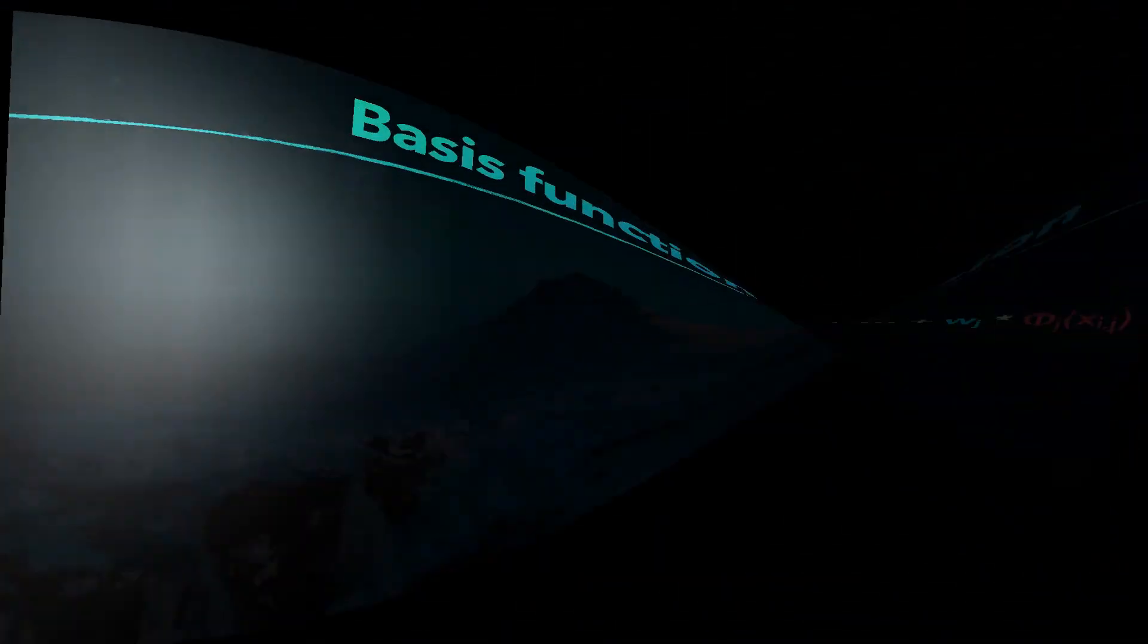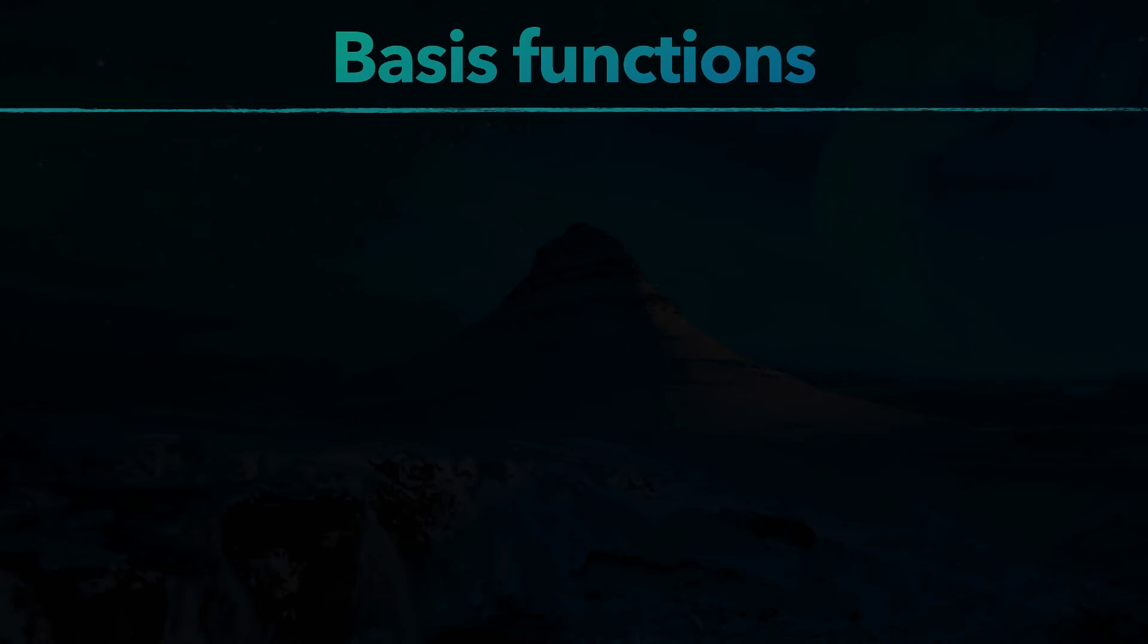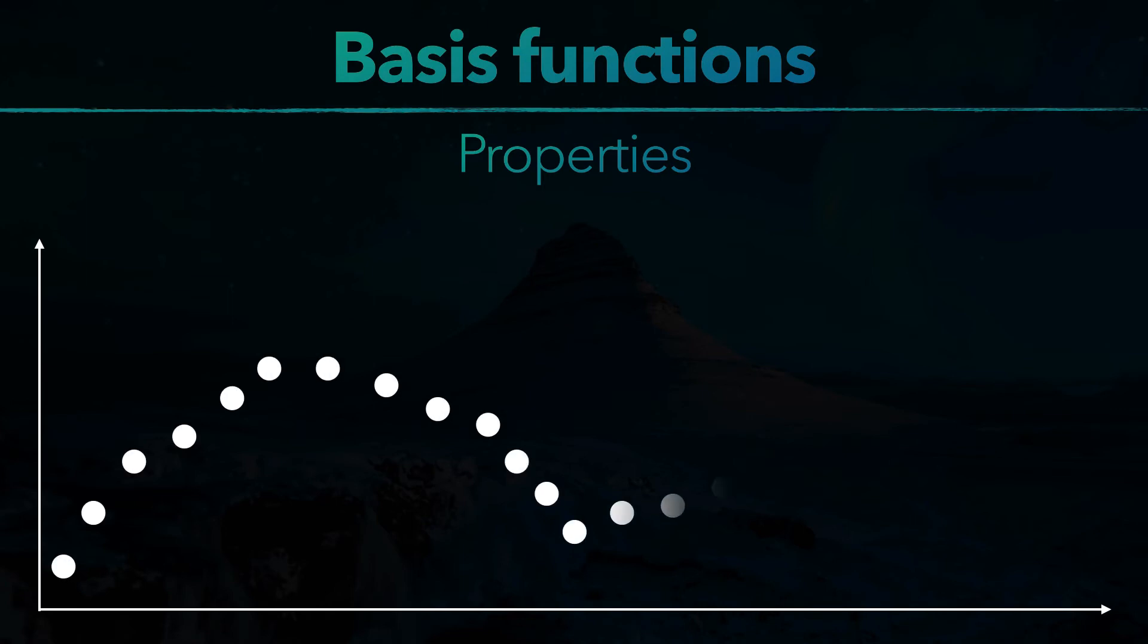Let's take a closer look at the basis functions now. They can have different properties. Imagine we made an experiment, sample lots of data and already fitted our model quite fine to this data. Now we sample one more data point, which is a huge outlier. Then some different things can happen.